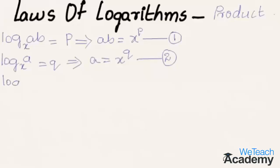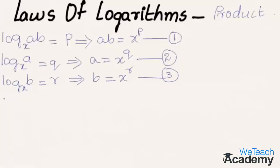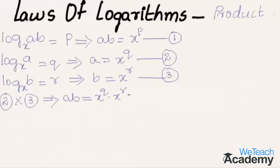Now considering log b to the base x equal to r, that implies b equals x raised to the power r — this is equation 3. Now let us multiply equations 2 and 3. That gives us ab on the left-hand side equal to x raised to the power q into x raised to the power r, which simplifies to ab equals x raised to the power q plus r. This is equation 4.